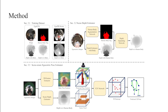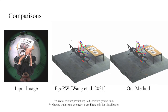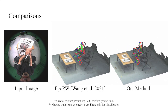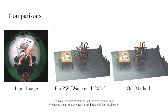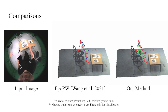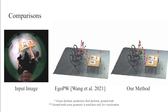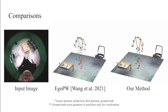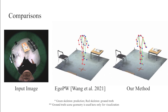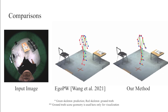Our method is the first to predict an egocentric 3D human pose considering the scene constraint. Here we show comparisons of our method with the state-of-the-art EaglePW method on various test sequences. Our method can estimate 3D body poses that are more accurate and more coherent with the scene. It can also avoid artifacts like body floating or body-scene penetration, ensuring the physical plausibility of the predicted poses.